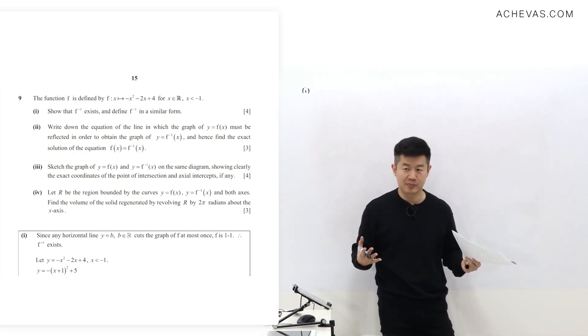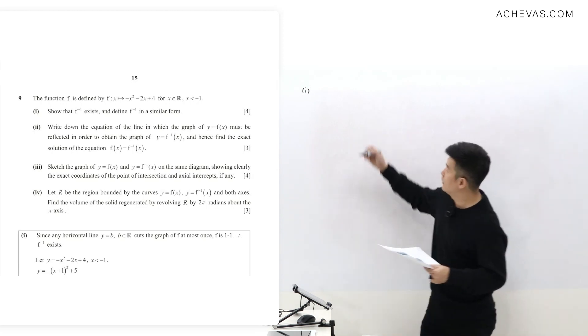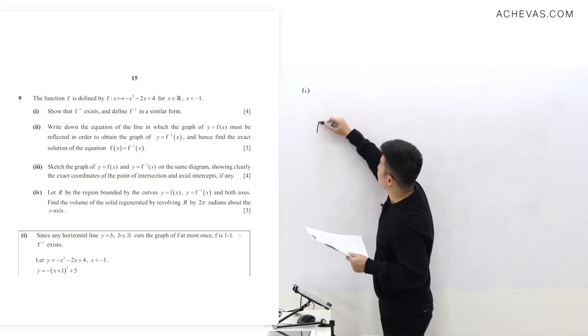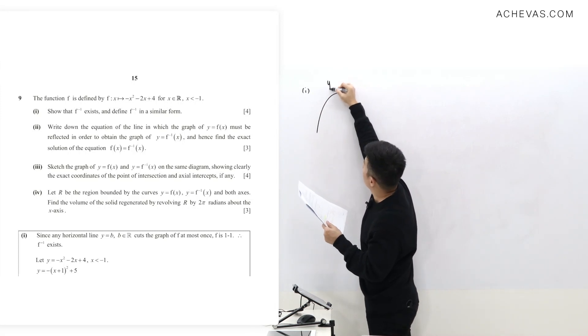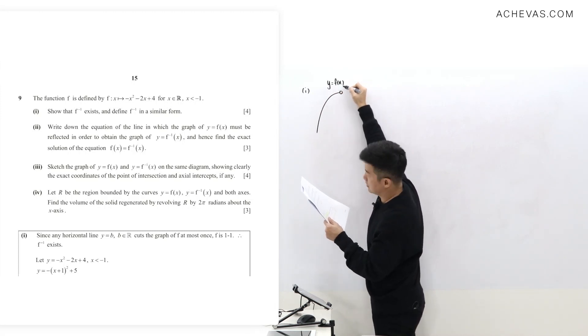I'm going to draw a graph. This is an easy graph. I can also use my calculator. I have y equals f(x) here. This point here is at (-1, 5).